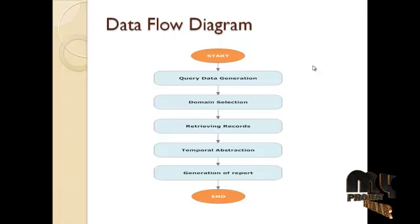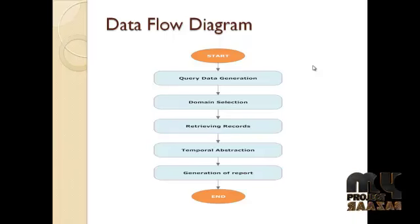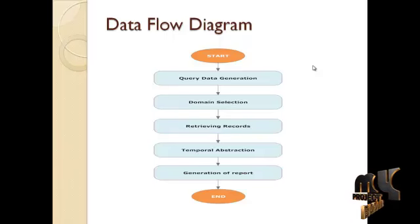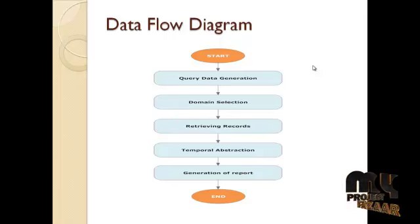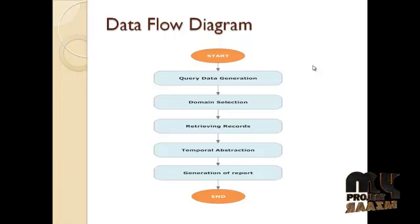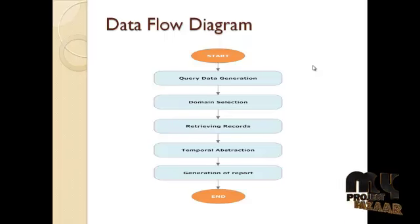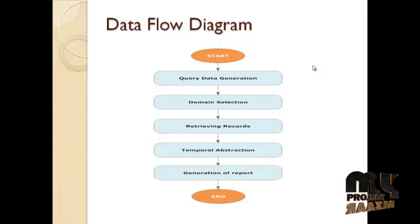Domain selection is a process which switches the model based on the disease selected by the user. There are nearly 7 diseases available in the patient decision making system. For example, if the user selects cancer disease, it will switch to the cancer disease model. If the user selects HIV disease, it will transfer to the corresponding model. Domain selection takes place in the second module.